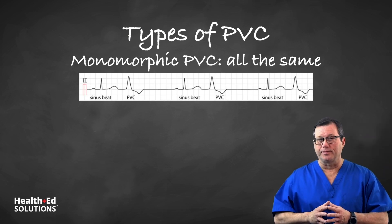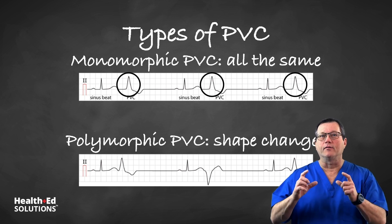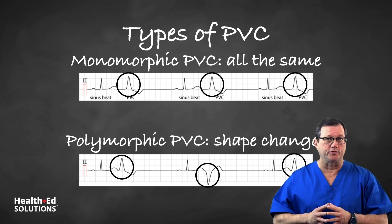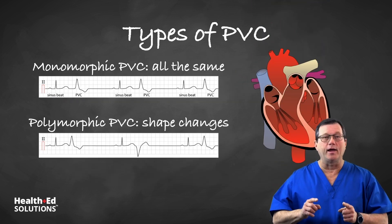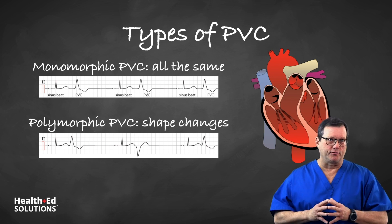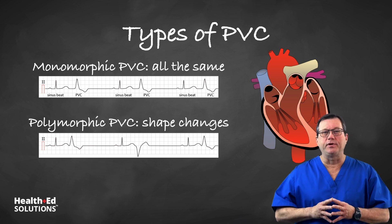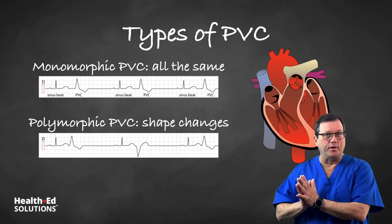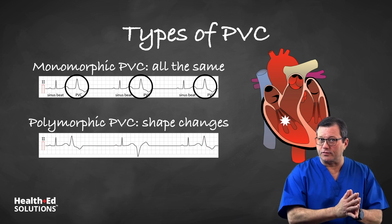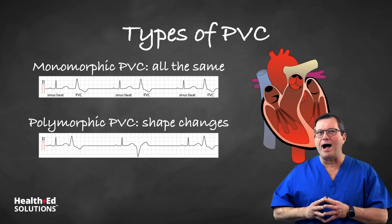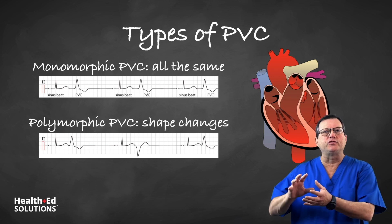PVCs come in two flavors: monomorphic and polymorphic. Morphology refers to the shape of the complex on the ECG tracing, and it speaks to where in the ventricles — or from what foci — the impulse is originating. Monomorphic PVCs are all the same shape, meaning they're all coming from the same foci, the same area of the heart in the ventricles.